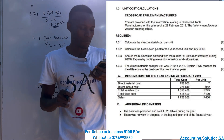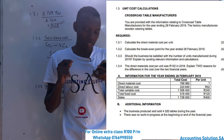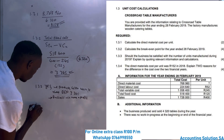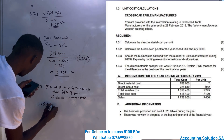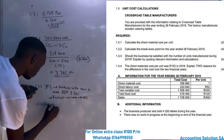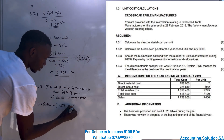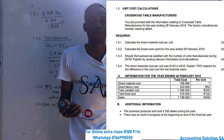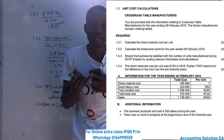Question 3.1.4: the direct material cost per unit was 152 rand in 2018. Explain two reasons for the difference over the two financial years. In 2018 it was 152 rand, but in 2019 it is 178 rand — which means the business is spending more when purchasing direct materials.